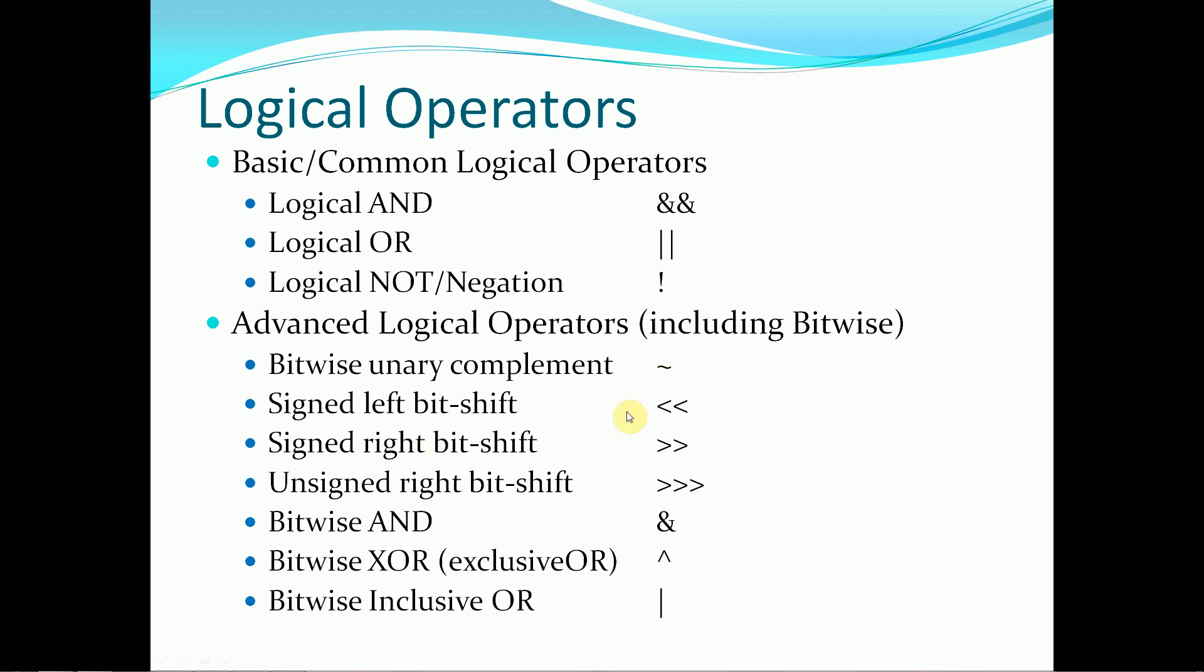We have the signed left bit shift, which is a double less than symbol. The signed right bit shift, which is a double greater than symbol. And we also have an unsigned right bit shift, denoted by three greater than symbols.